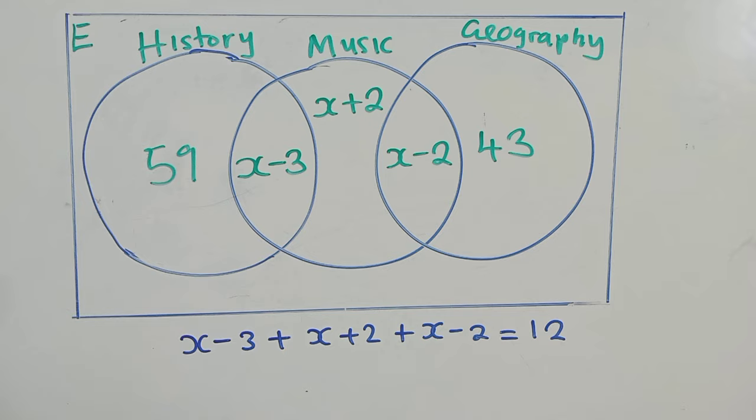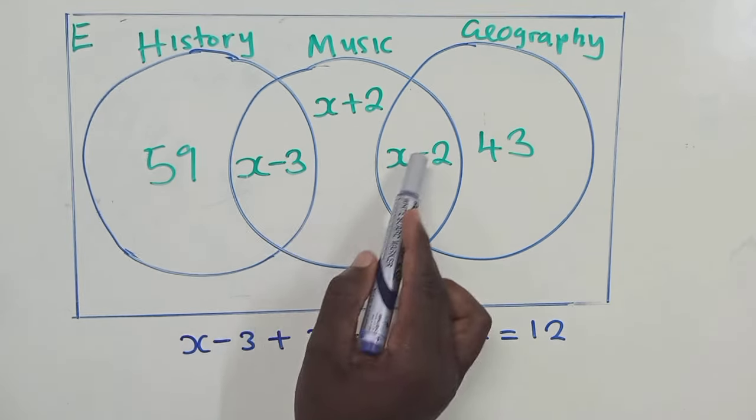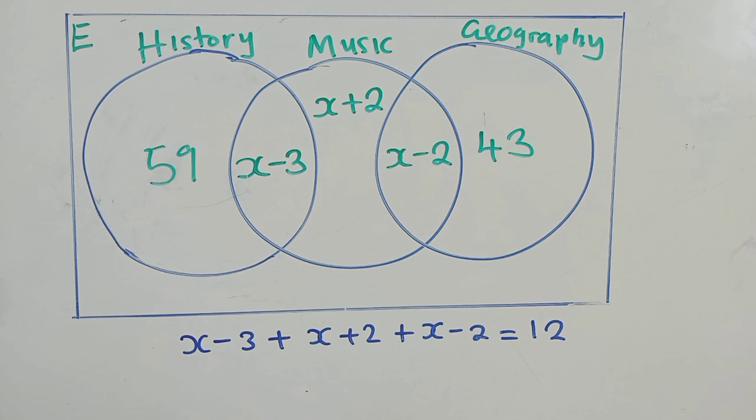There were 12 learners, so all of them add up, this plus this plus this is equal to 12. So we can group like terms. x plus x plus x will get 3x, and then this and this will cancel. We remain with minus 3, which is equal to 12.